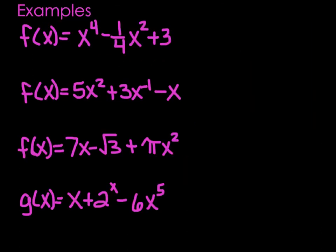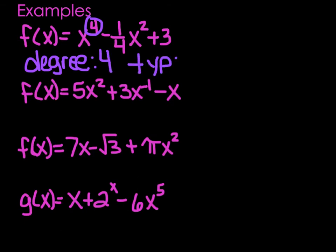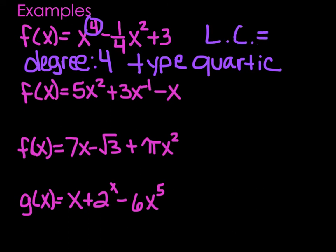Here are some examples. For each one, tell me the degree, the type, and the leading coefficient. For the first one, the highest power is 4, so the degree is 4. The type is quartic. And the leading coefficient is the coefficient on the highest power — there isn't one written, so it is 1. Don't put 0; it's 1.